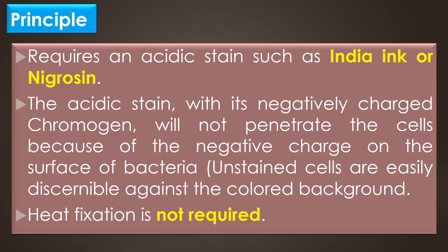Principle. The negative staining requires the use of an acidic stain such as Indian ink or nigrosine. The acidic stain with its negatively charged chromogen will not penetrate the cells because of the negative charge on the surface of bacteria. Therefore, the unstained cells are easily discriminable against the colored background.